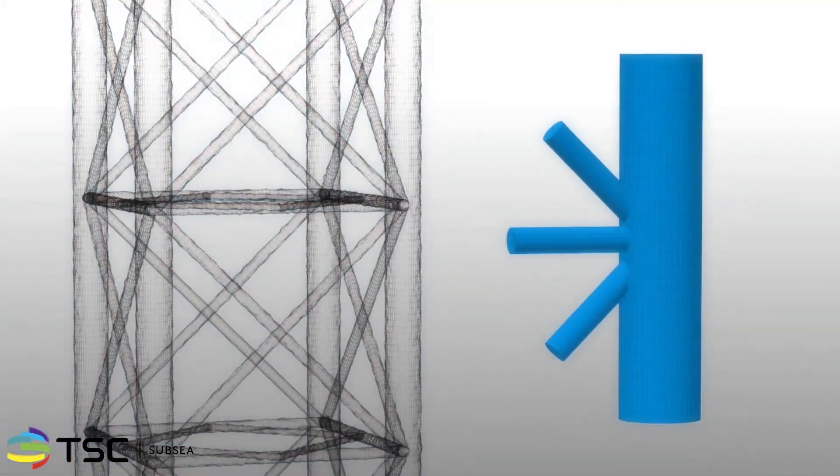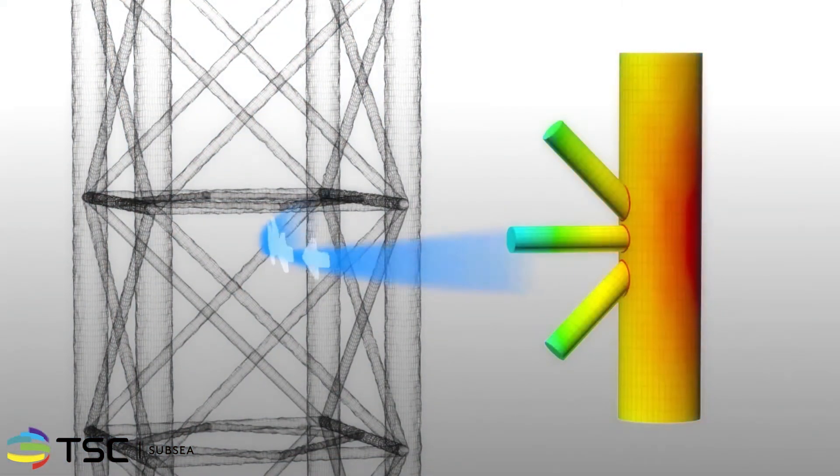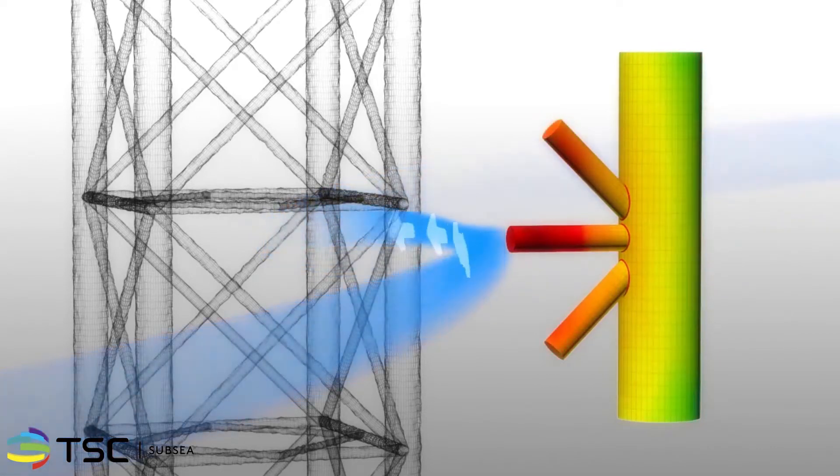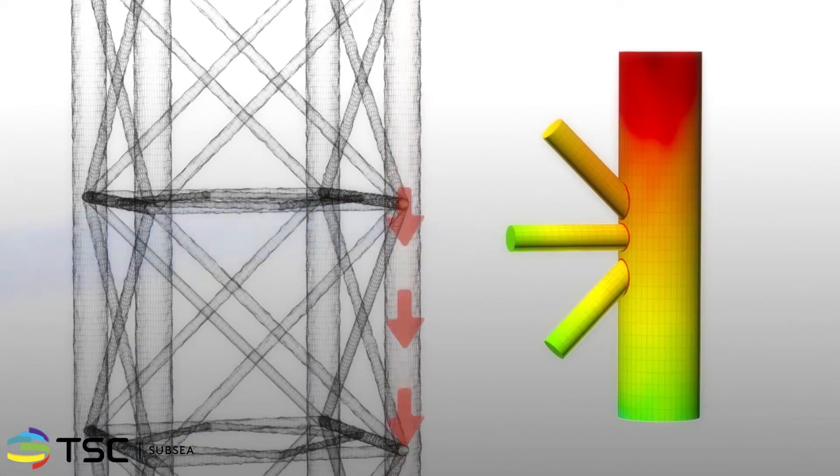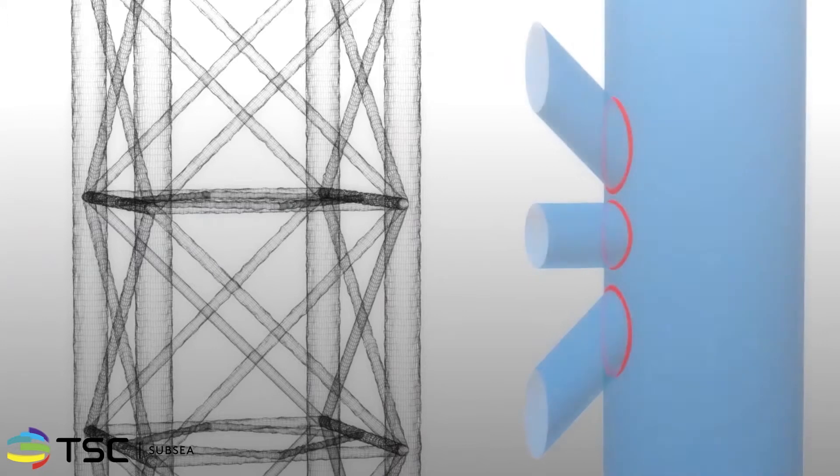Offshore structures have fatigue sensitive joints. As a result of dynamic loading, these joints are susceptible to fatigue crack growth, particularly at the weld parent plate interface. Regular inspection is required to ensure the integrity and safety of the structure is maintained for its entire life cycle.